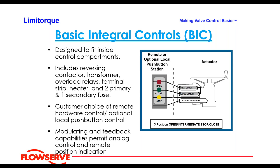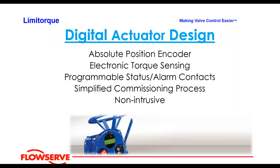These electromechanical actuators typically have what's called basic integral control inside the control box: a transformer, reversing contactor, terminal strip, heaters, and fuses. All you have to do is bring in your power supply and discrete control. If you want to position with it, a modulating feature for 4–20 mA control in and 4–20 mA control out can be added. Over the last 20 years, a lot of actuators and process equipment have become digital-based, because we can get so much more information to make decisions — whether for preventative maintenance or precise process control.